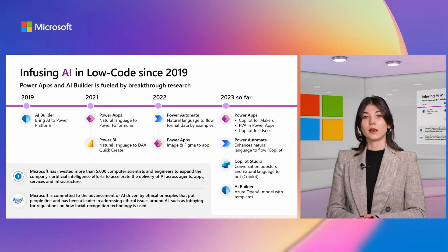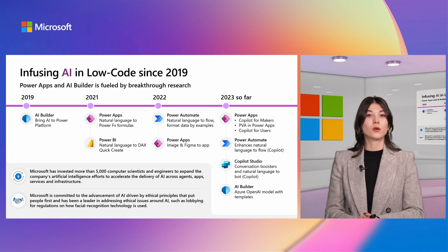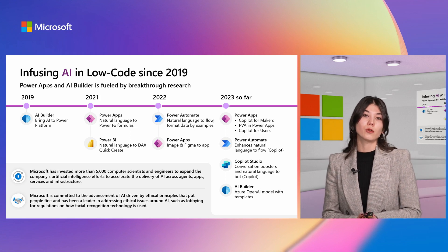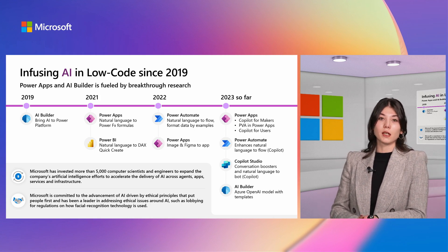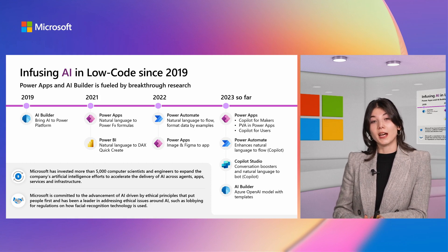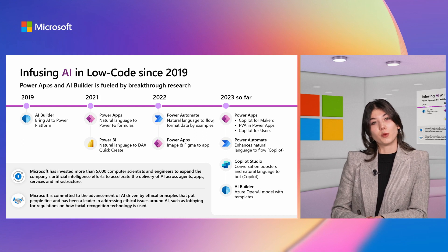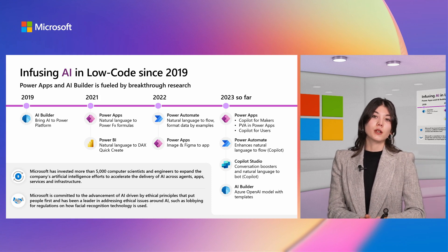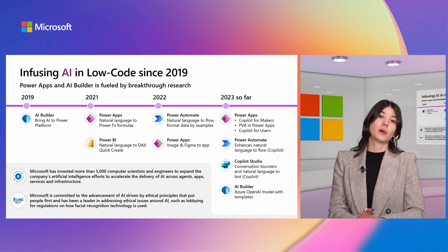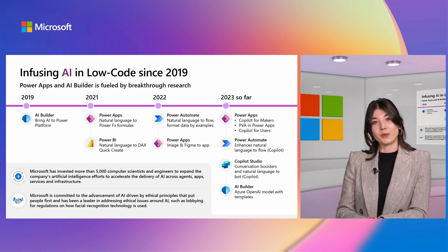AI is nothing new — we have been embedding AI within the platform since 2019, starting with AI Builder models from Azure that allow things like extracting information from documents or detecting objects in images. We then progressed into natural language processing, where you can describe in natural language what you want your application or automation to do. Today we're focusing on the fully right-hand side — Copilot Studio — and we already did previous webinars on PowerApps Copilots and Power Automate Copilots.